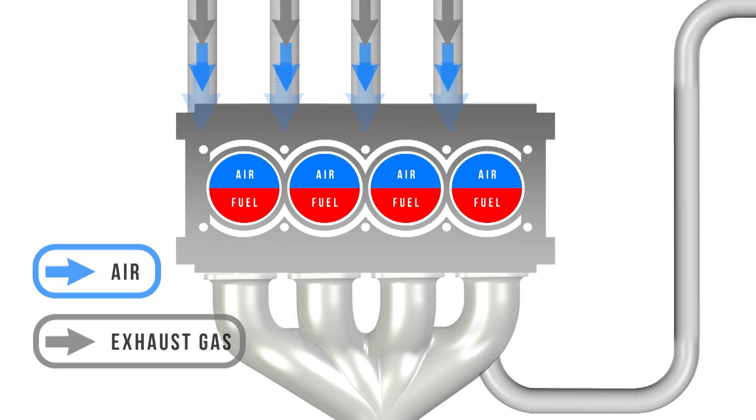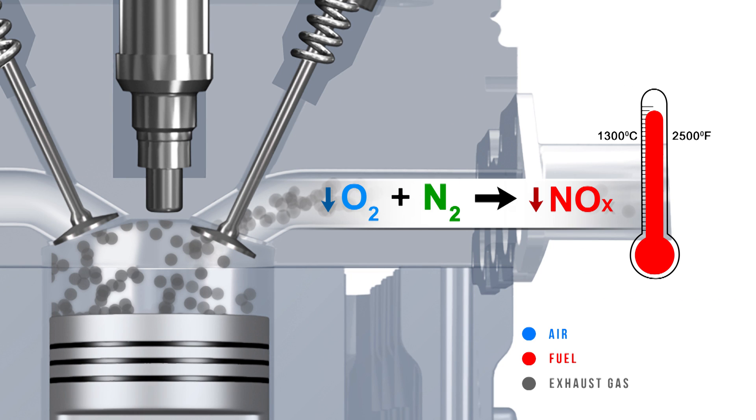Introducing small amounts of exhaust gas back into the combustion chamber displaces the amount of oxygen entering the engine. Using less oxygen in the air fuel mixture reduces the combustion temperatures, limiting the formation of NOx.